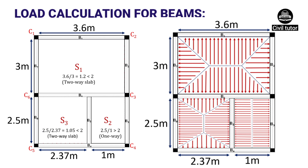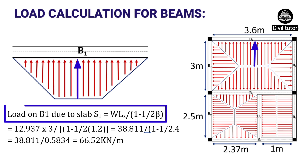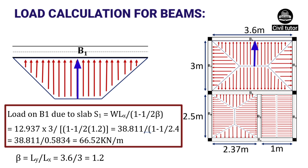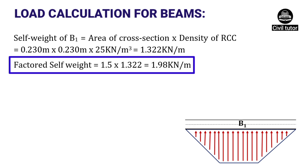Now let's calculate the total loads carried by each beam. Beam B1 carries the upper trapezoidal portion of slab S1, given by the formula W·Lx·(1 − 1/(2β)), where W = 12.937 kN/m², Lx = 3 m (shorter span), and β = Ly/Lx = 3.6/3. Substituting these values, the load on B1 due to S1 = 66.52 kN/m. The self weight of B1 = 0.230 × 0.230 × 25 = 1.322 kN/m, and the factored self weight = 1.5 × 1.322 = 1.98 kN/m.